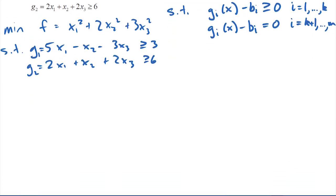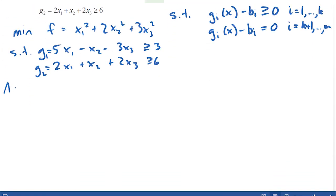And now what I'm going to do is go ahead and assume that both of my constraints are binding. Okay, so that g1 equals three and g2 equals six.